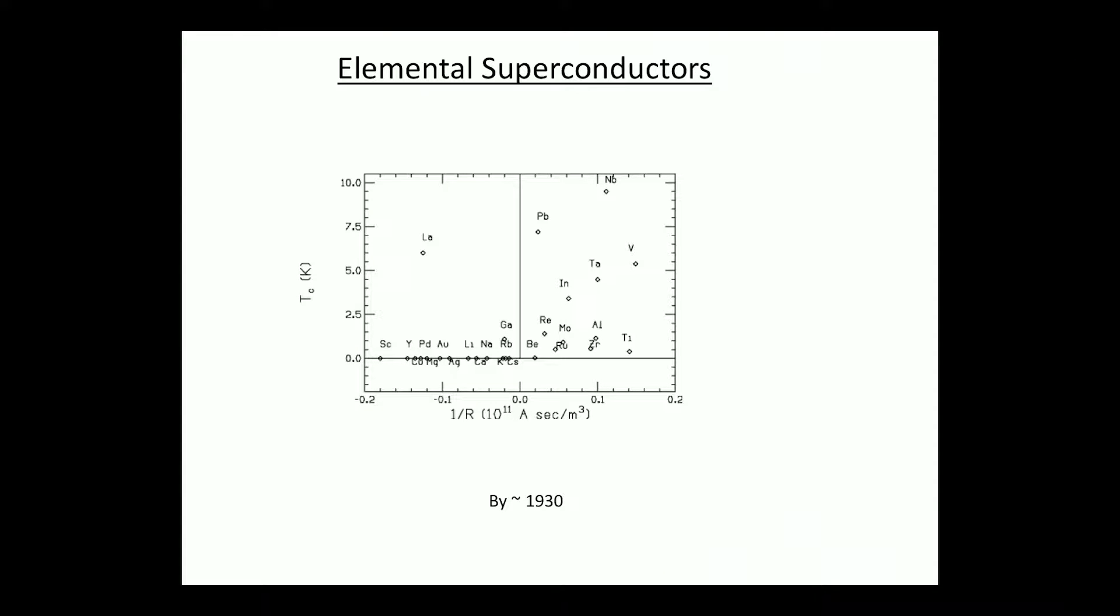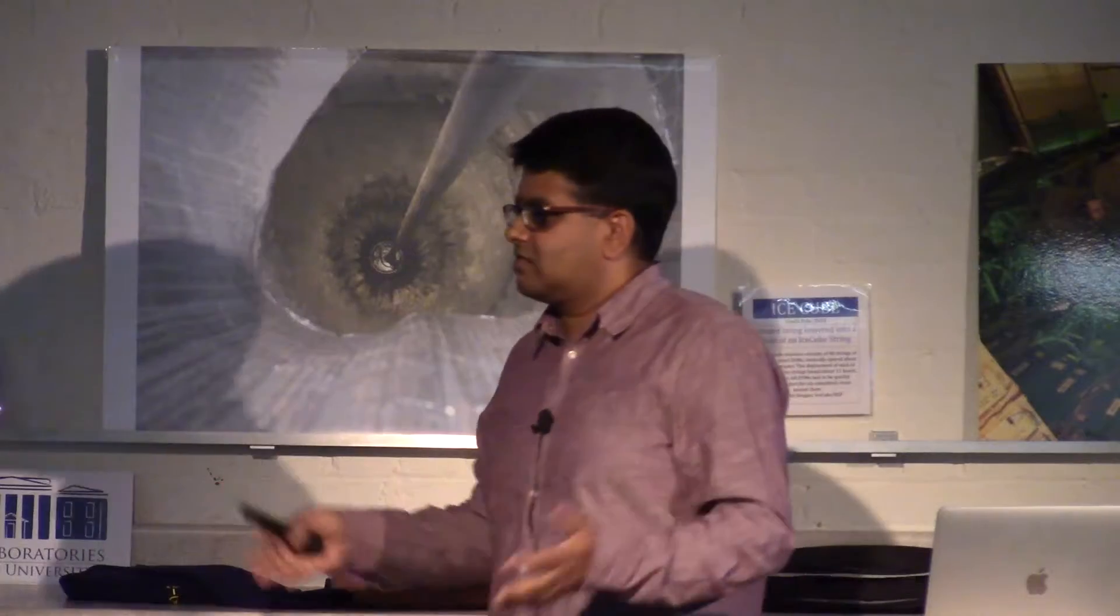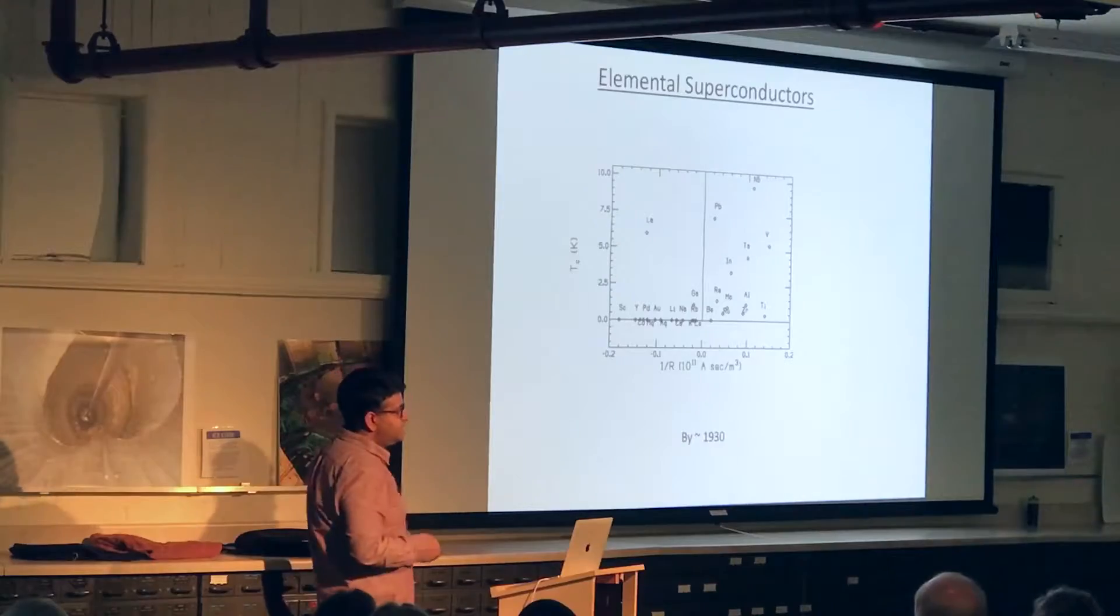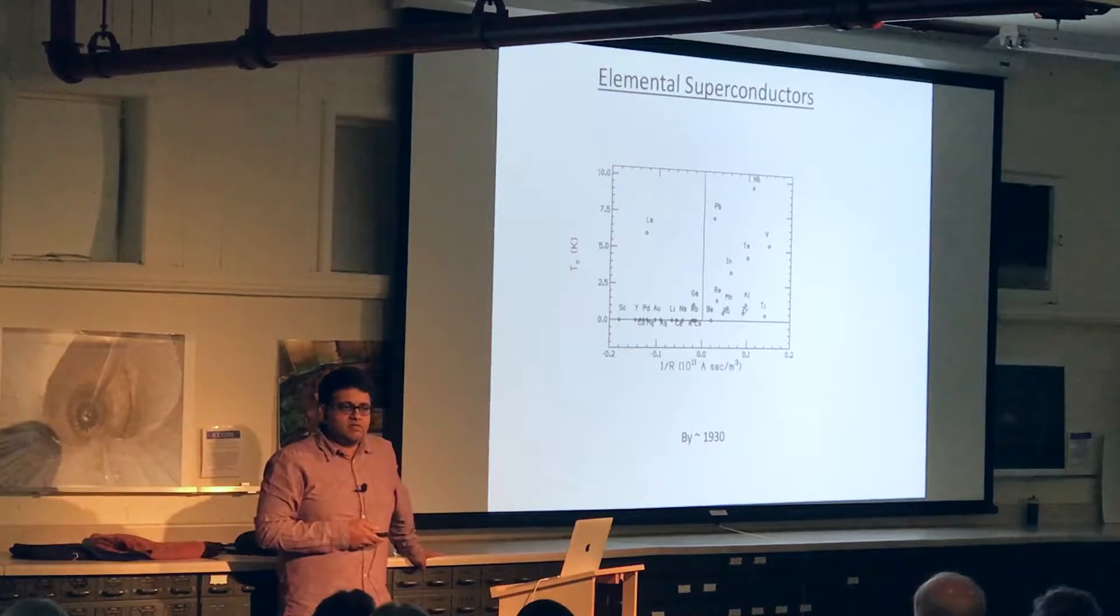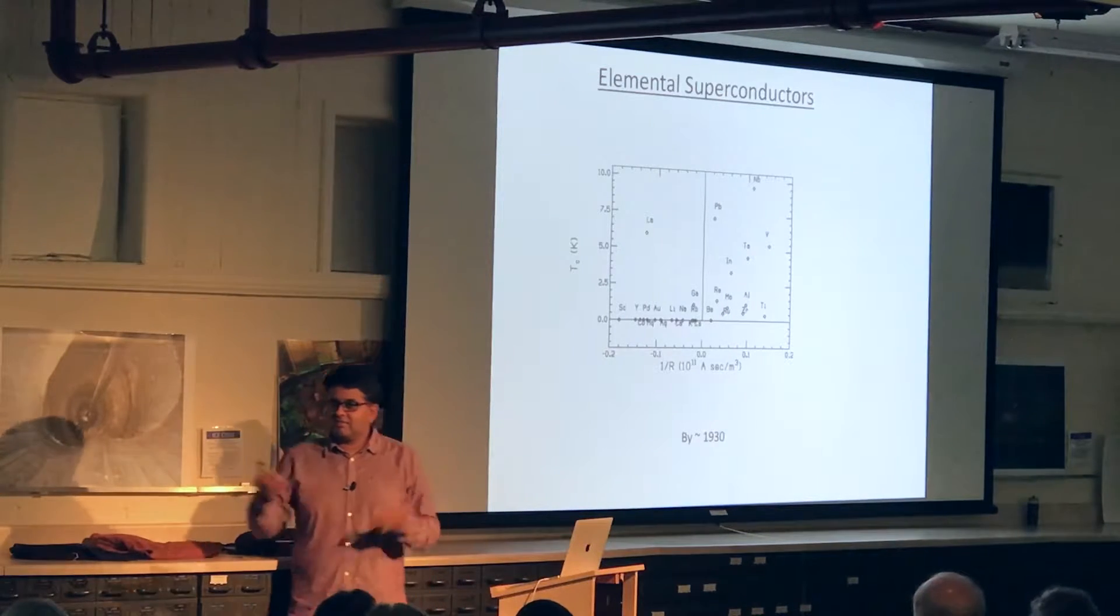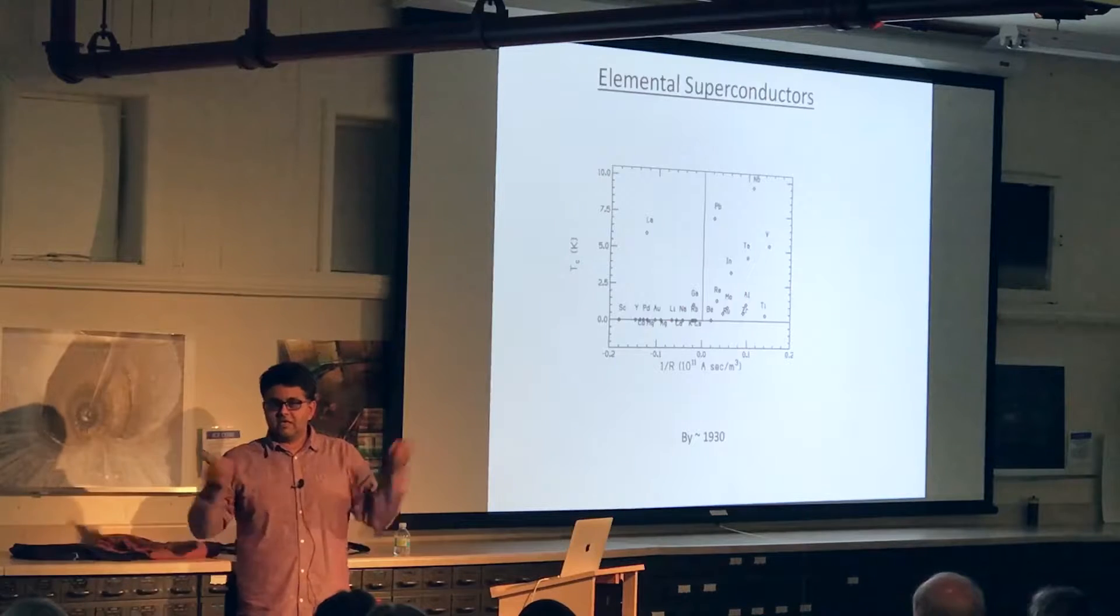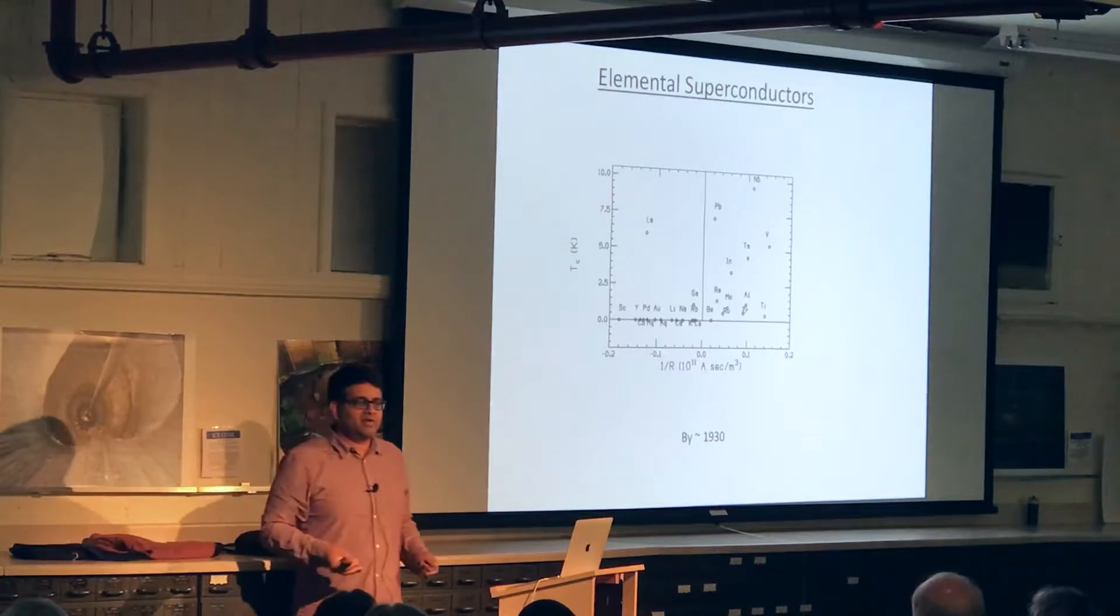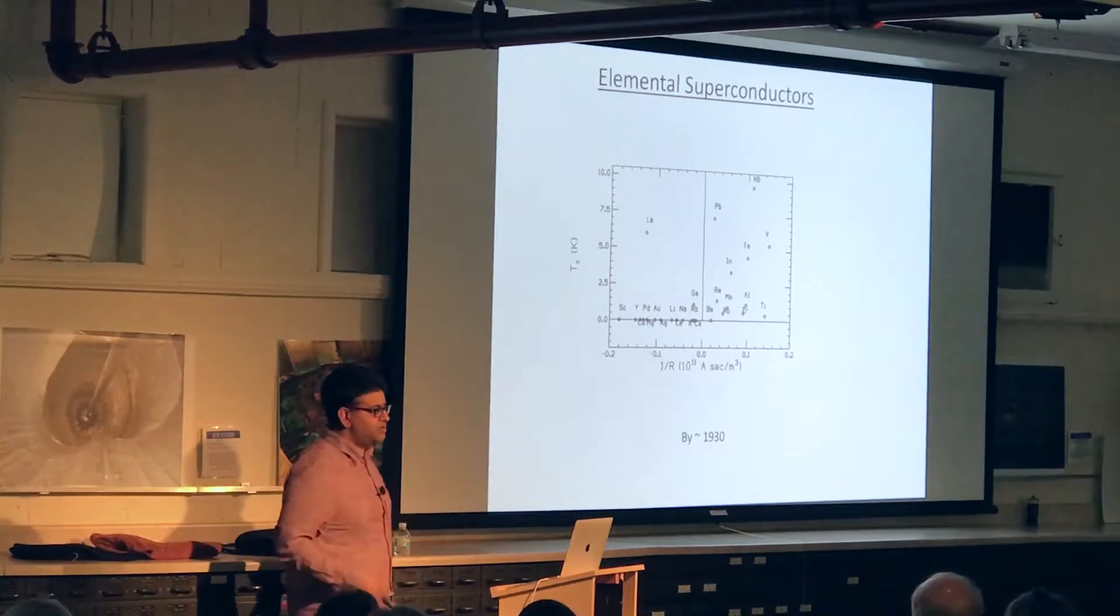So around 1930 people had gone through the periodic table. They had put everything in liquid helium. They had figured out some things are superconducting, some things are not superconducting. Here were their TCs and then people started making compounds. They said well we've done all the elements, let's start mixing them together. Let's make compounds. Let's take all the compounds and put them in liquid helium and see if those things go superconducting.